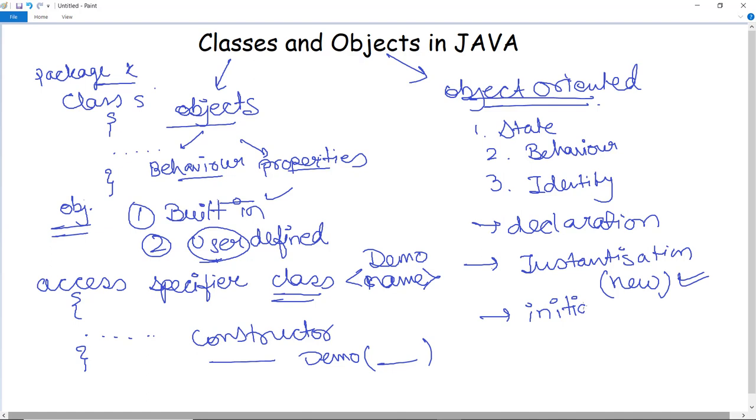So next comes initialization. This is the final step in which you need to initialize the object by calling the class constructor which you have created. That is having same name as the class name. So declaration, then instantiation with the help of new keyword and then the initialization.